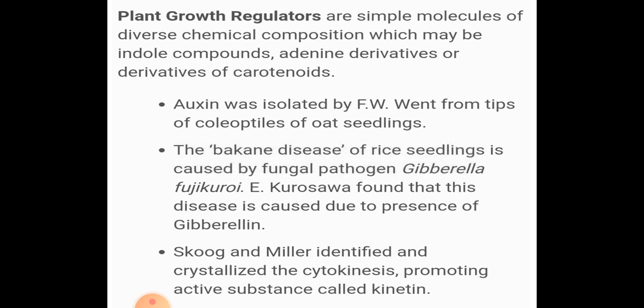In the mid-1960s, three independent researchers reported the purification and chemical characterization of three kinds of inhibitors: Inhibitor B, Abscissin II, and Dormin. After investigation, it was found that these three chemicals were identical and their effects were the same.